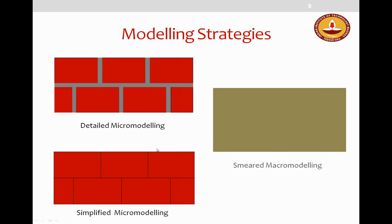There is also macro-modeling or smeared macro-modeling, where units and mortar are smeared into a continuum. Since masonry is an anisotropic material encompassing units ranging from irregular stones to well-burned clay bricks, and various mortar types, it is necessary to combine individual properties into equivalent properties using the principle of homogenization.